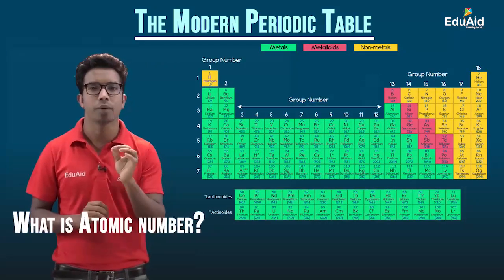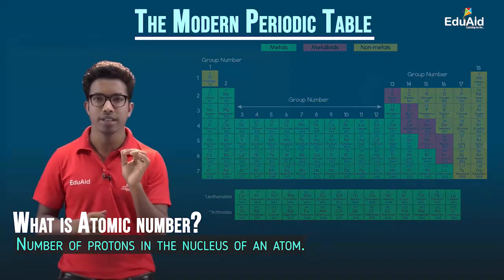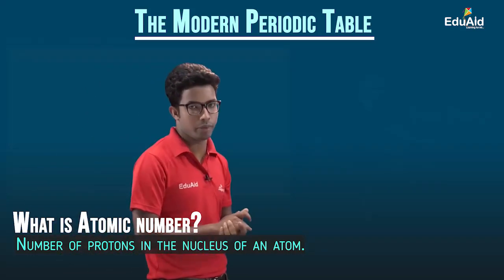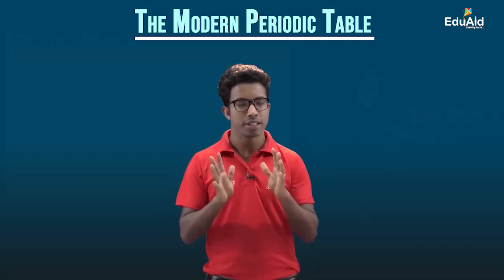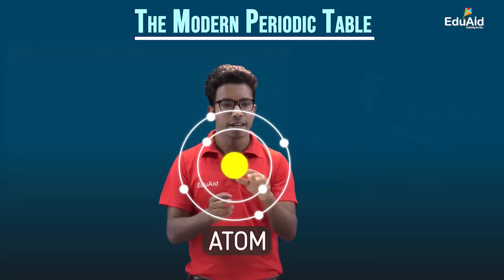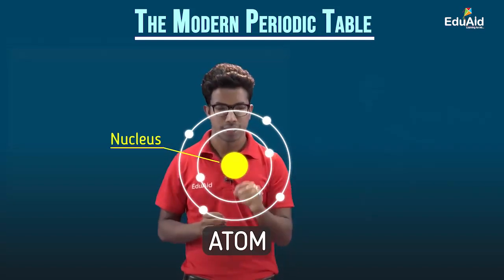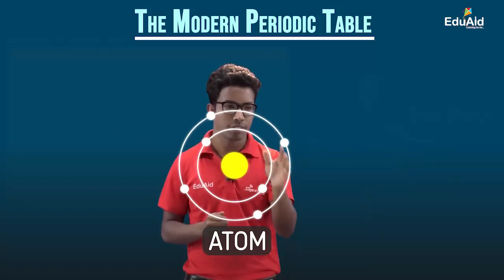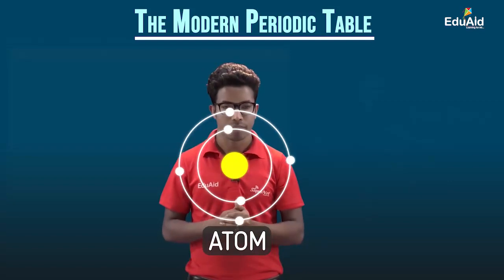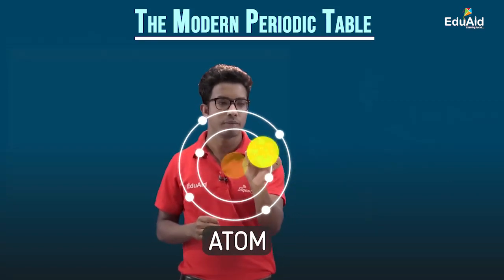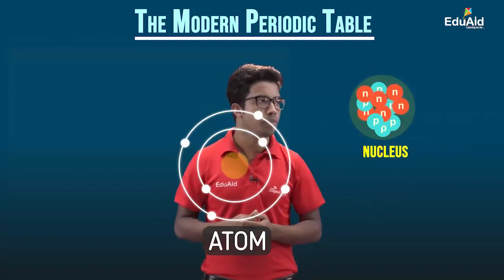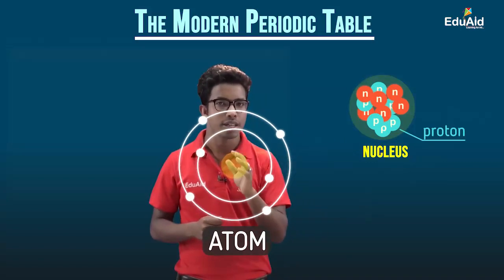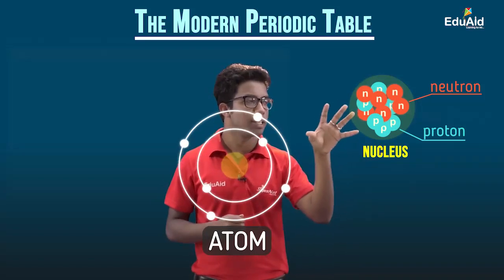Now we should know what atomic number is. Atomic number is associated with the structure of the atom. In the structure of the atom, electrons are revolving around the nucleus in fixed shells. If you have a closer look at the nucleus, there are two kinds of particles inside it — protons and neutrons. All nuclei are made of these protons and neutrons, and the number of protons and neutrons changes with different elements.